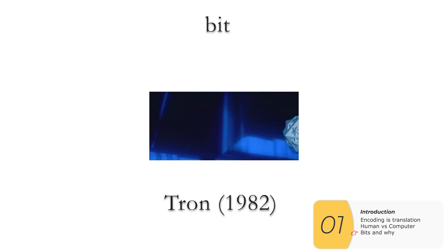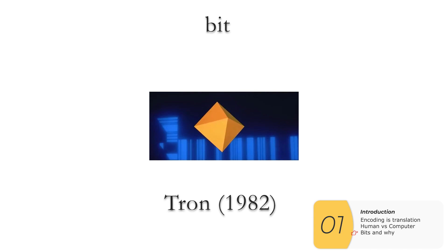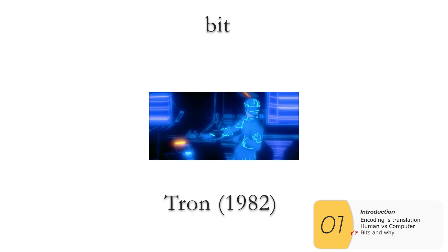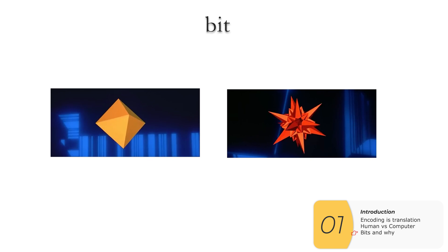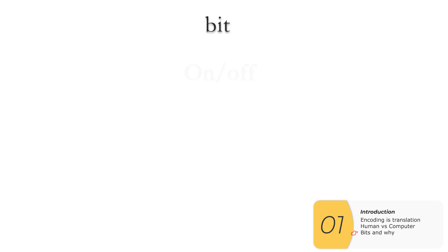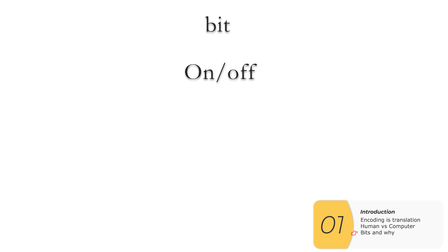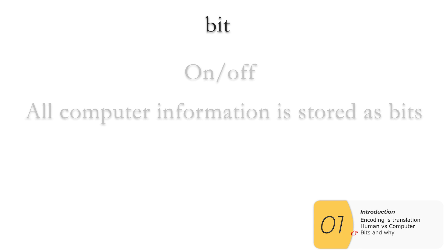That's a clip from the 1982 movie Tron, where bit could only be yes or no. And it's pretty accurate to real life. In real life, a bit can be either on or off, which is pretty much the same as yes or no. And all computer information is stored as bits.